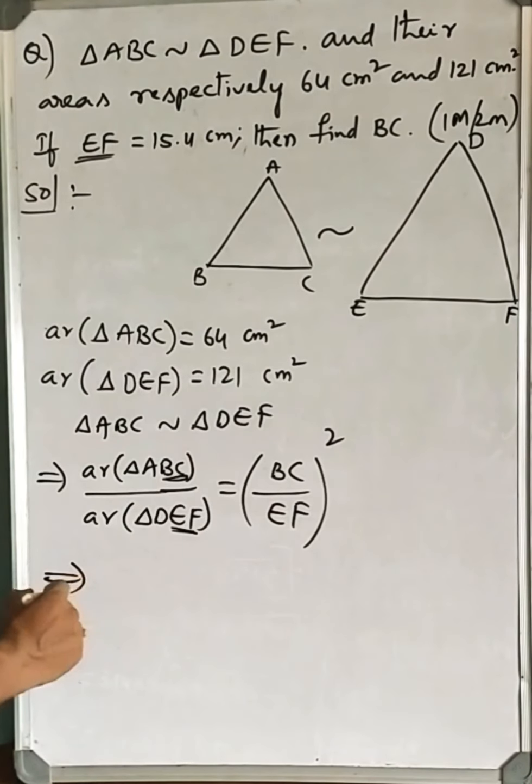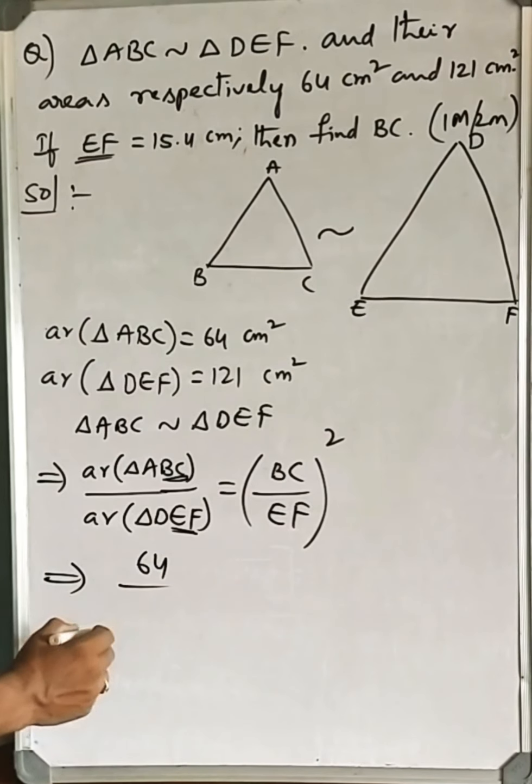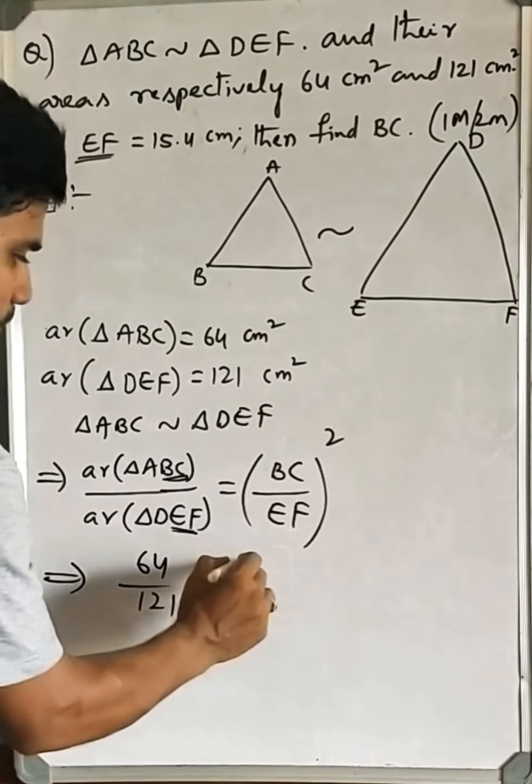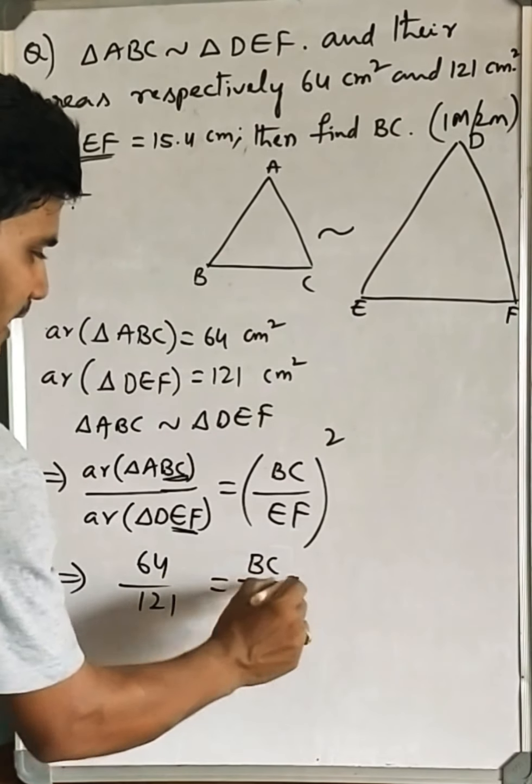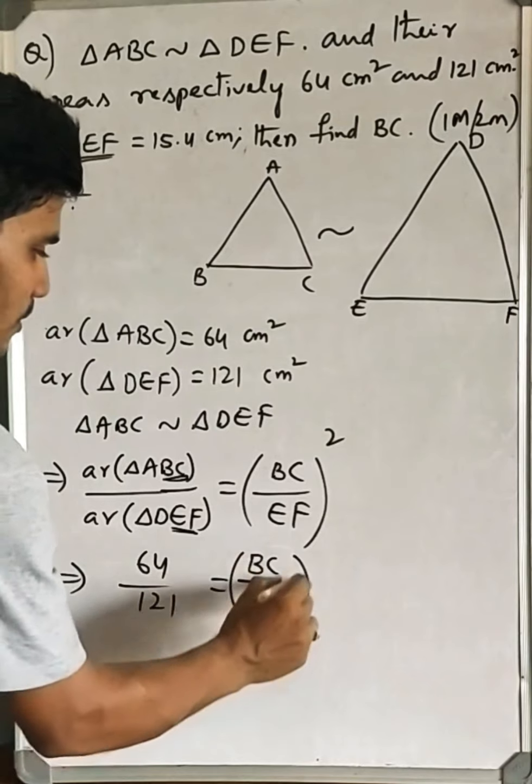Let us substitute the values that are given. Area of triangle ABC is 64, and area of triangle DEF is 121, equals BC (not given) over EF, which is given as 15.4, whole square.